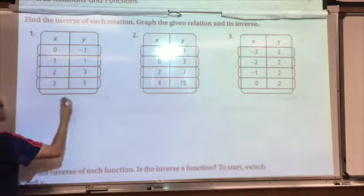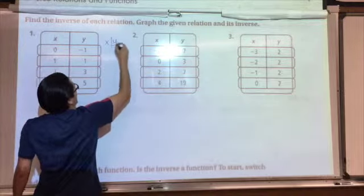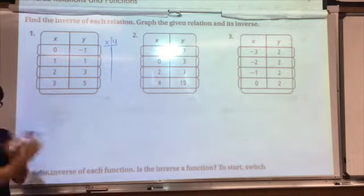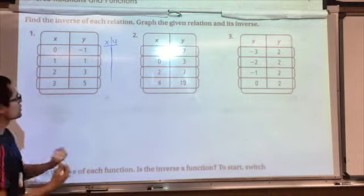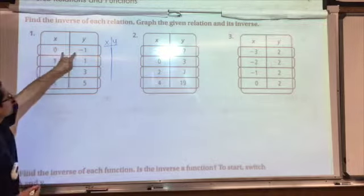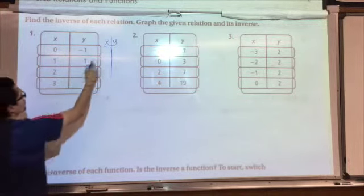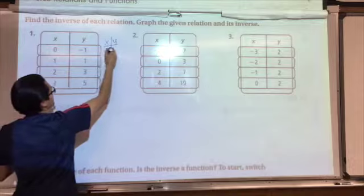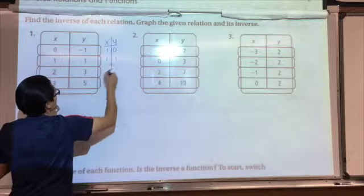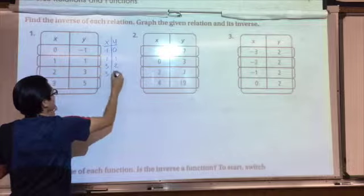Make a new table. Inverse means that the x's and the y's flip, switch with each other. That's one of the meanings of it. So what you're going to do is just switch them. So your new x value is going to be negative 1 and y is 0; then 1, 1; 2, 3; 3, 5.